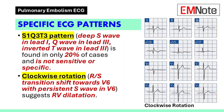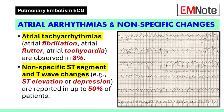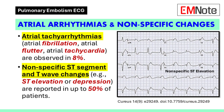Clockwise rotation, indicated by a shift of the R over S transition point towards V6 with a persistent S-wave in V6, is also known as the pulmonary disease pattern. This suggests rotation of the heart due to right ventricular dilatation. Atrial tachyarrhythmias, such as atrial fibrillation, atrial flutter, and atrial tachycardia, are observed in 8% of patients. Non-specific ST segment and T-wave changes, including ST elevation and depression, are reported in up to 50% of patients.